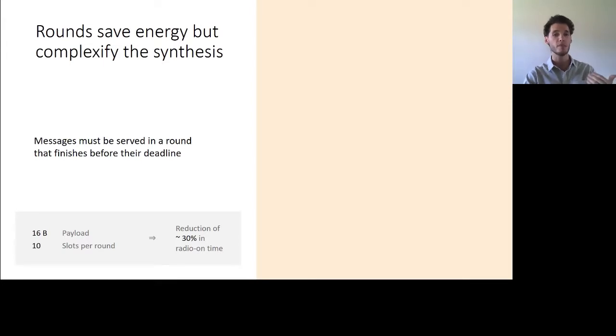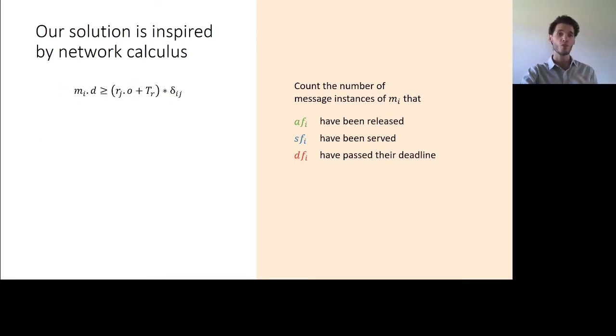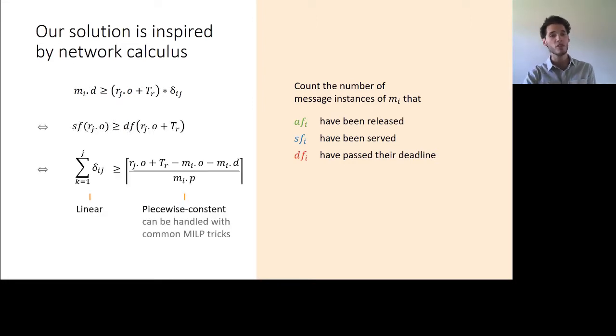Things like that a message must be served in a round that will finish before the message deadline. If you think about how you would implement this in a MILP formulation, you will have a constraint that looks something like this. The deadline of a message i should be larger than the start time of the round j plus the execution time of that round. However, this should only hold true if and when the message i is assigned to the round j. The problem here is that both the start time of the round and the assignments are variables of our problem. Therefore, such constraint is non-linear and cannot be embedded in the MILP. So the workaround we propose is inspired by network calculus, whereby we introduced a function that counts the number of message jobs that are already served and have passed that deadline for every message. The interesting aspect of this is that we can use those functions to reformulate the constraint we have and those functions have expressions that are nice enough so that we can embed them in MILP using common tricks.